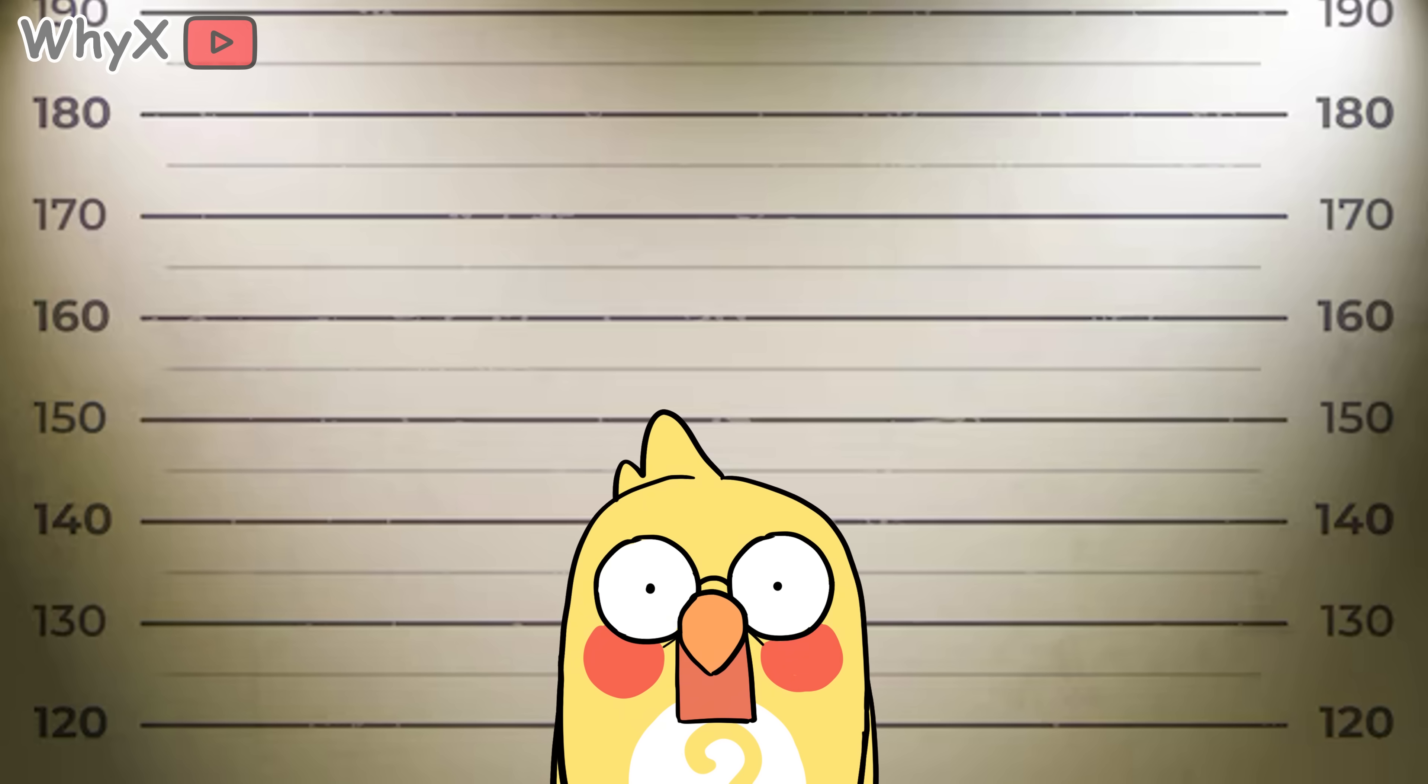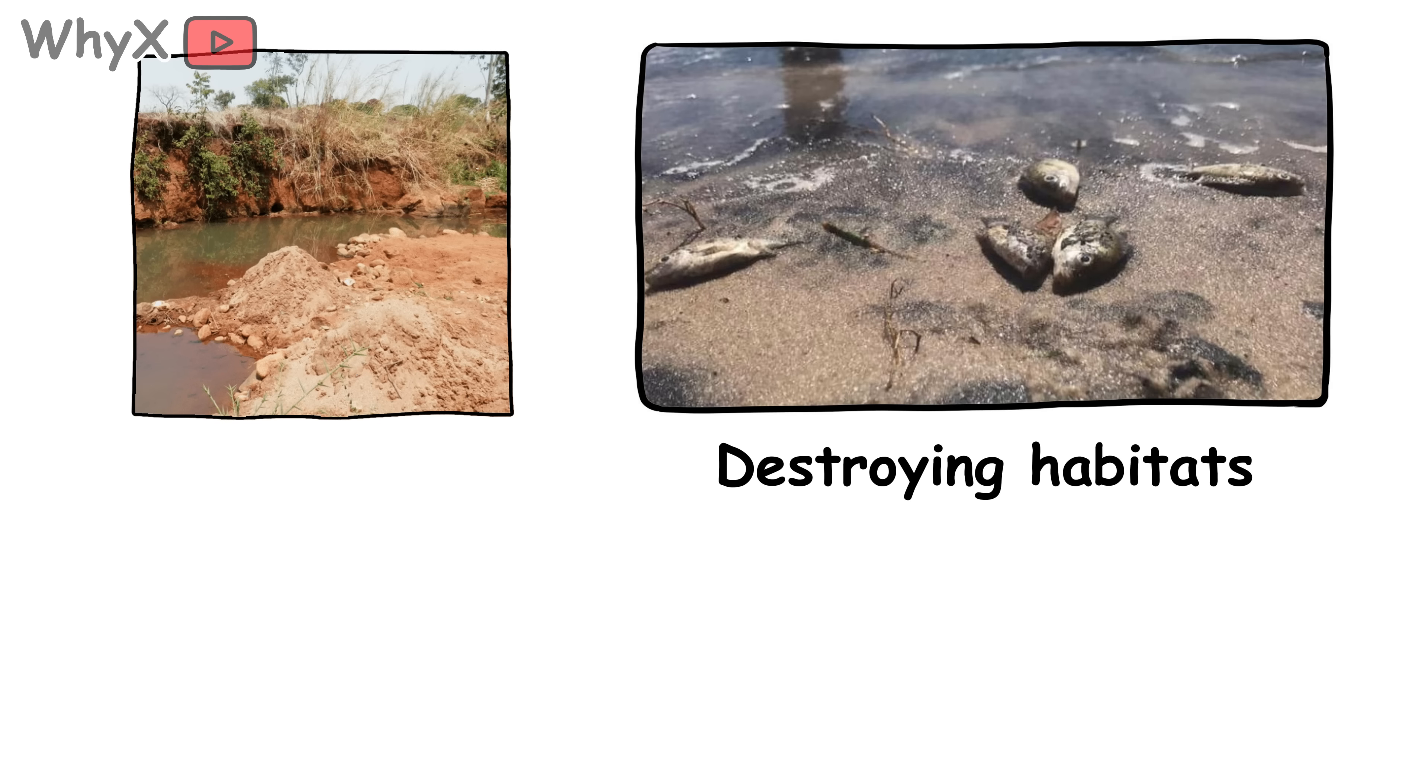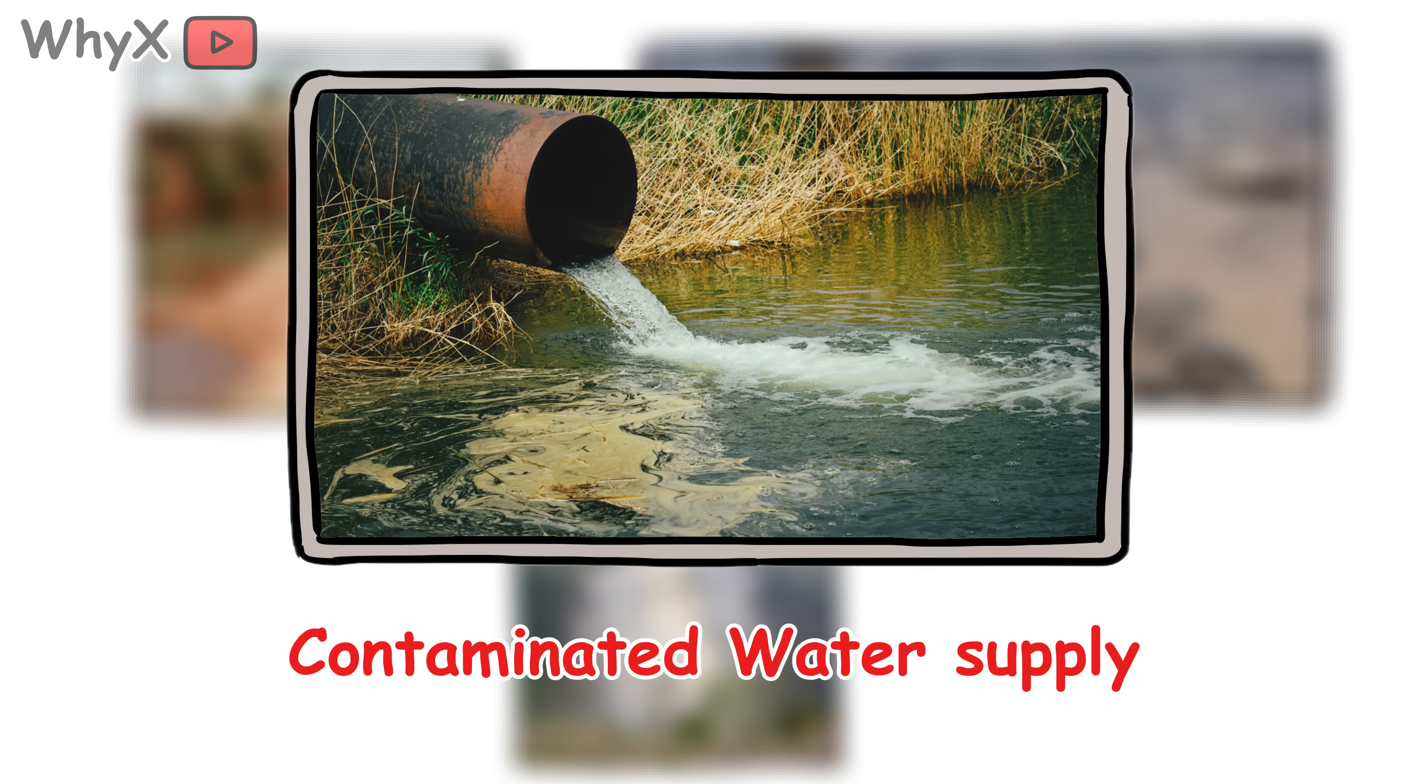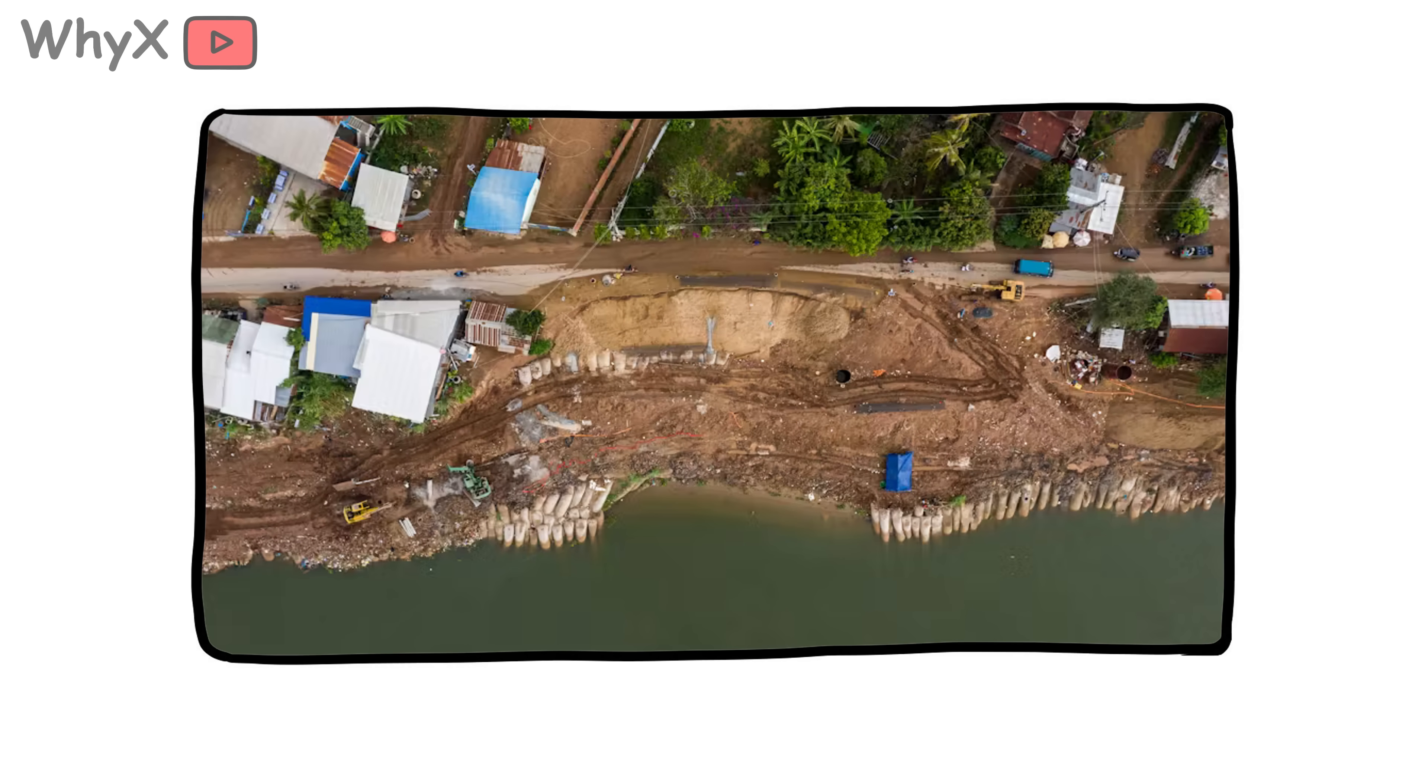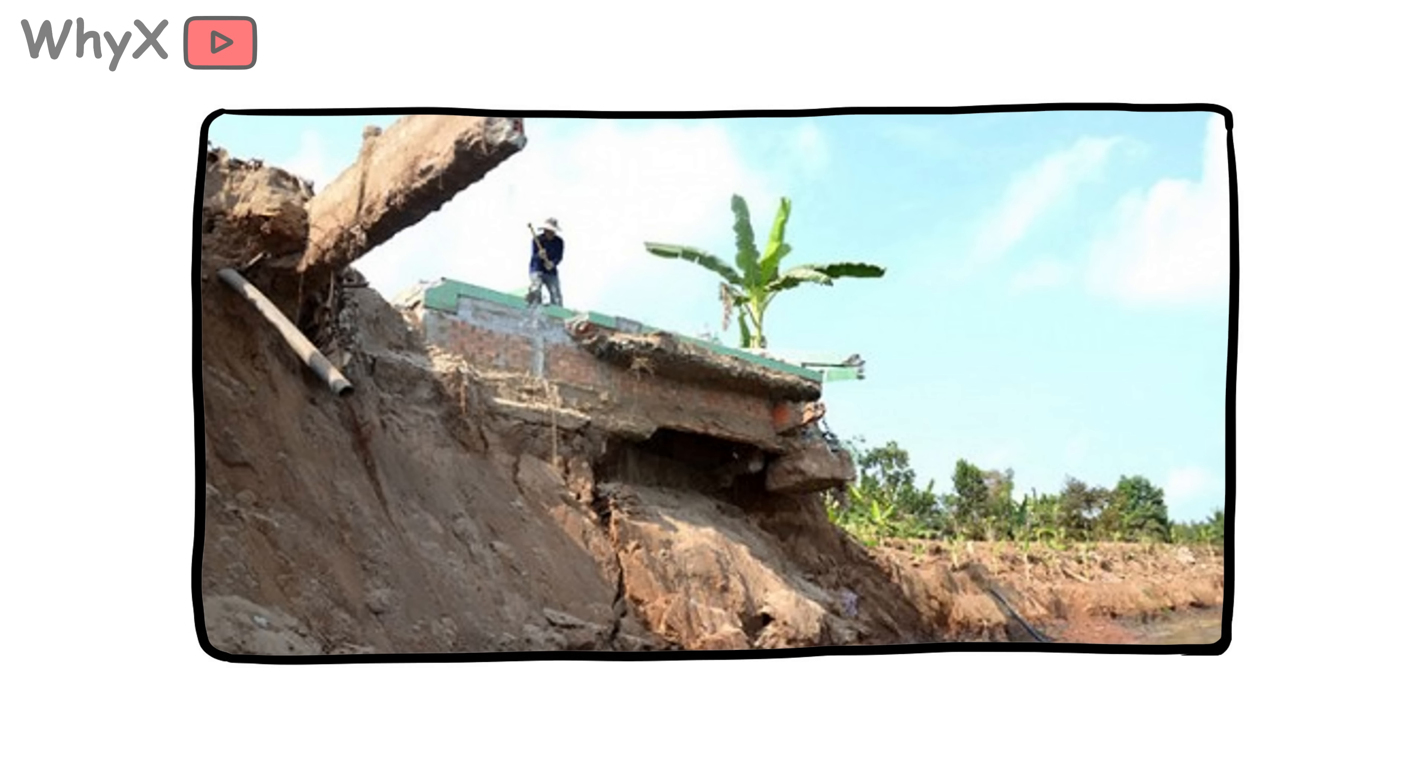This can cause real damage, like eroding riverbanks, destroying habitats for fish and birds, causing landslides, contaminating water supplies. In some regions, entire ecosystems have collapsed because too much sand was removed too fast. This is not just an environmental issue. It is a human one. Villages have been swallowed by erosion. People have lost homes. In some places, the ground literally gave out beneath them, all because of sand.